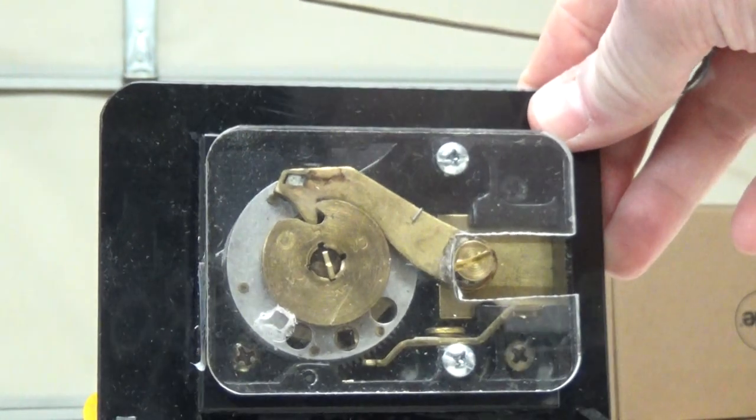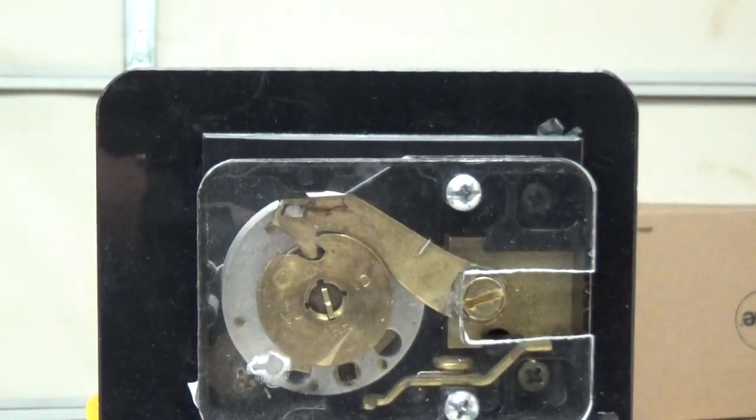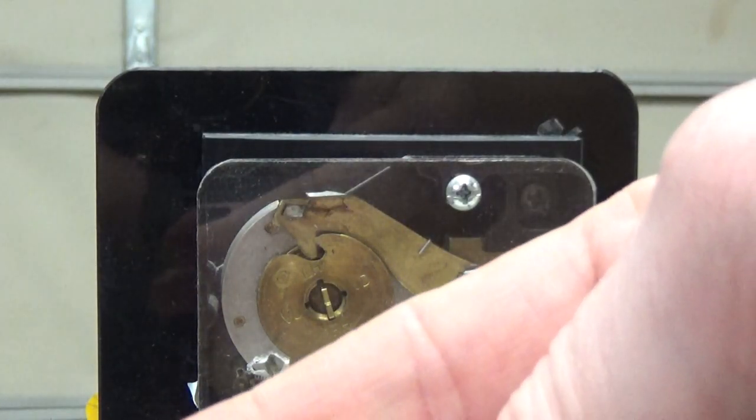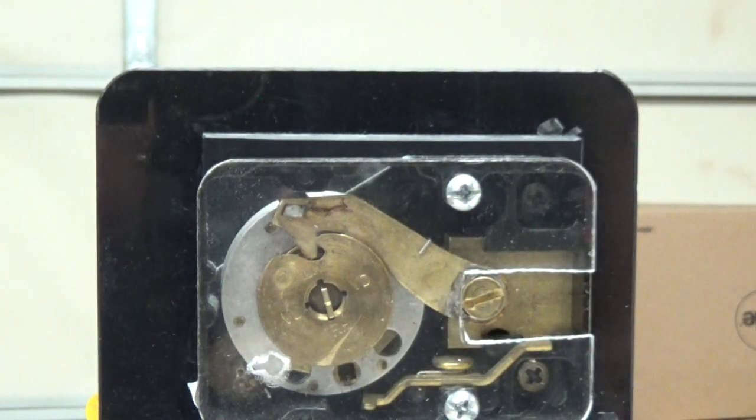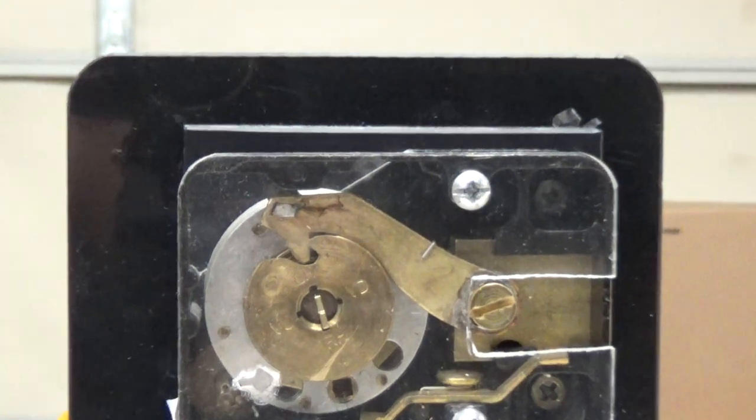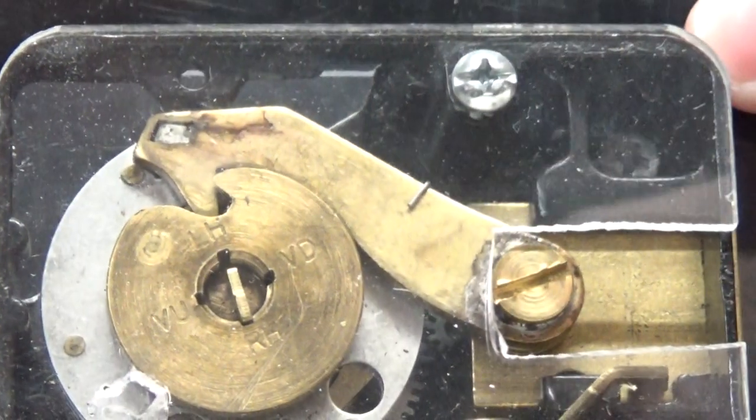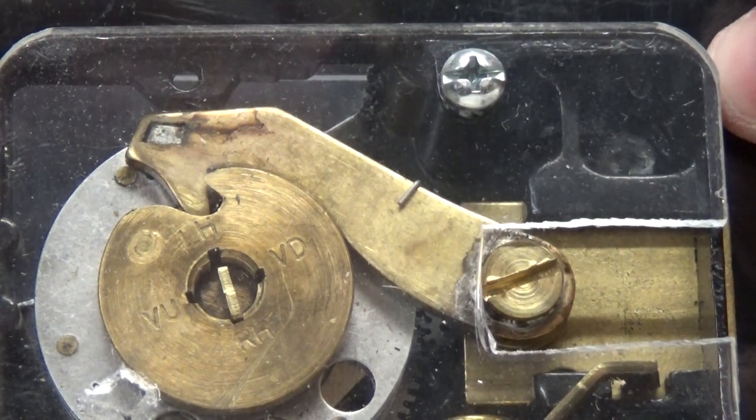This is a see-through model but it would line those up and allow you to put a change key in there and allow you to change the combination. What that does actually is it just releases all the wheels and unlocks them.